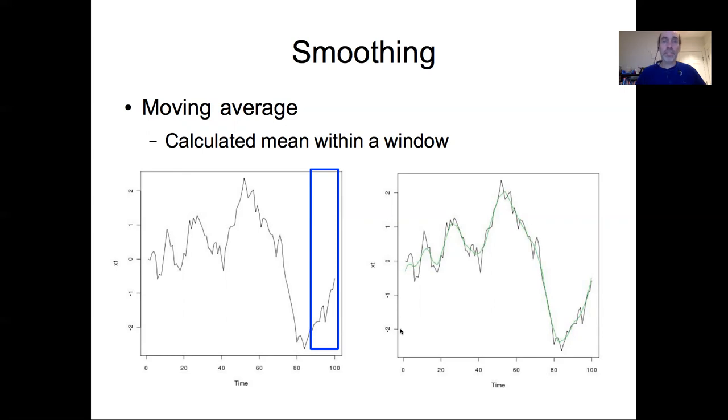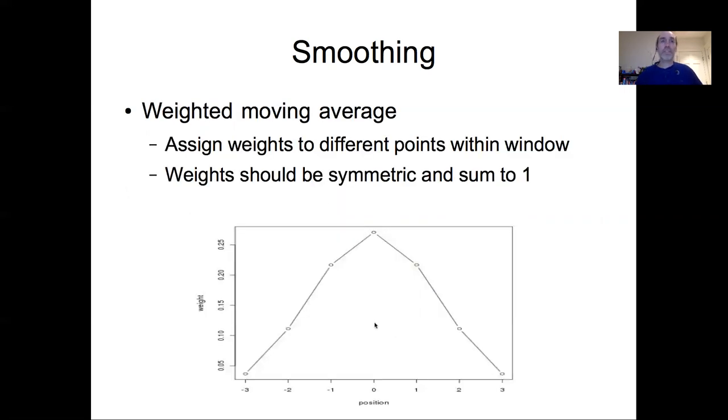Moving on from the simplest moving average, another approach is a weighted moving average. In the simple moving average, all points within the window are assigned the same weight—we're just calculating a simple mean. In a weighted moving average, we assign weights to different points within that window. The weights have to be symmetric and sum to one. Here's an idea of a moving window with width seven: zero being where you're centered on, plus or minus one, plus or minus two, plus or minus three. I've given the most weight to the center point and progressively less weight going out.